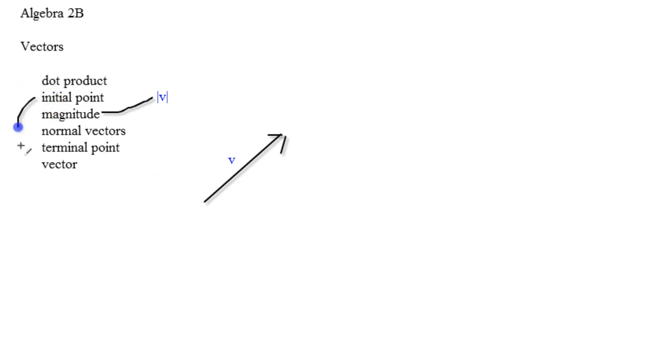Some things to talk about. Its initial point is right here, and its terminal point is right here. To find the coordinates of this vector, you use the less than sign. You're going to take the terminal y point and minus the initial y point.